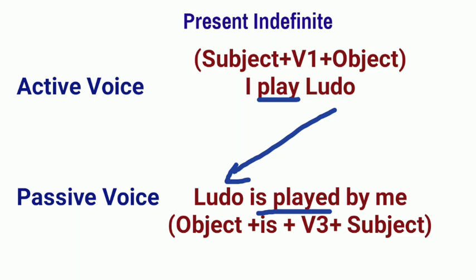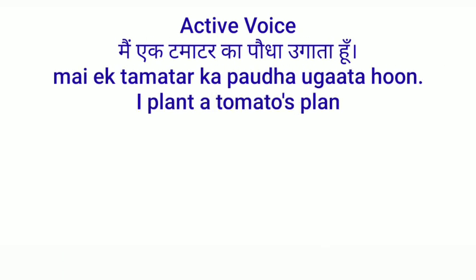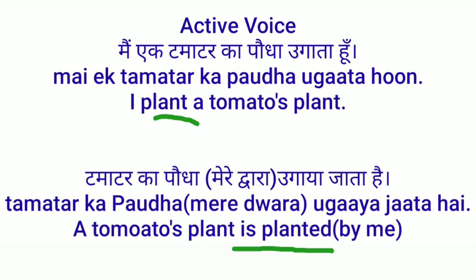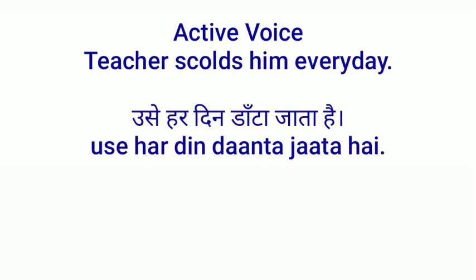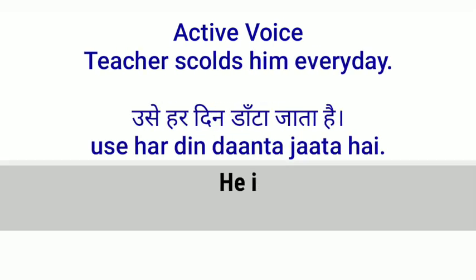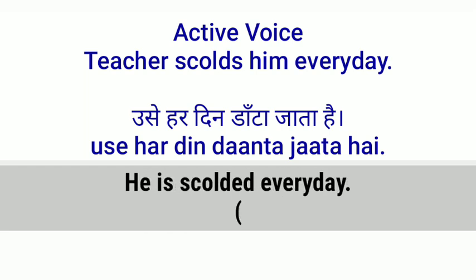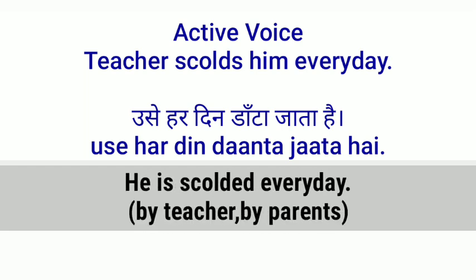Now we will see some more examples of Present Simple passive voice. 'I plant a tomato plant' — passive: 'A tomato plant is planted by me' — is + verb third form. The object of active voice becomes the subject of passive voice. 'Teacher scolds him everyday' — 'he' becomes the subject: 'He is scolded everyday by teacher' — is + verb third form.